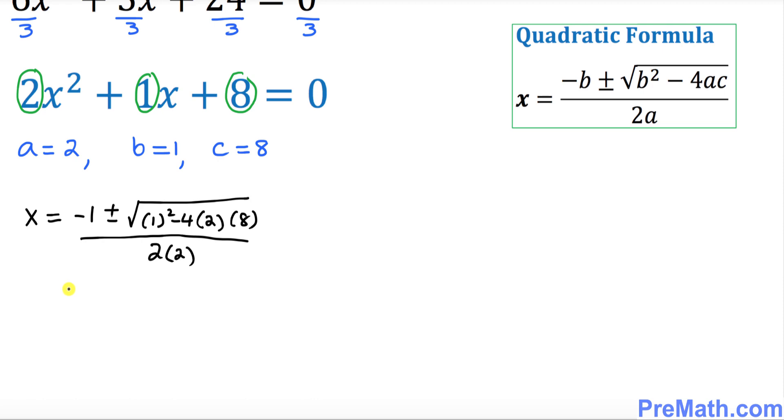So let's go ahead and simplify. We got negative 1 plus or minus, 1 squared is 1 minus when you multiply these numbers that's going to give you 64, divided by 4. So let's simplify this, that's going to be negative 1 plus minus square root of negative 63 over 4.